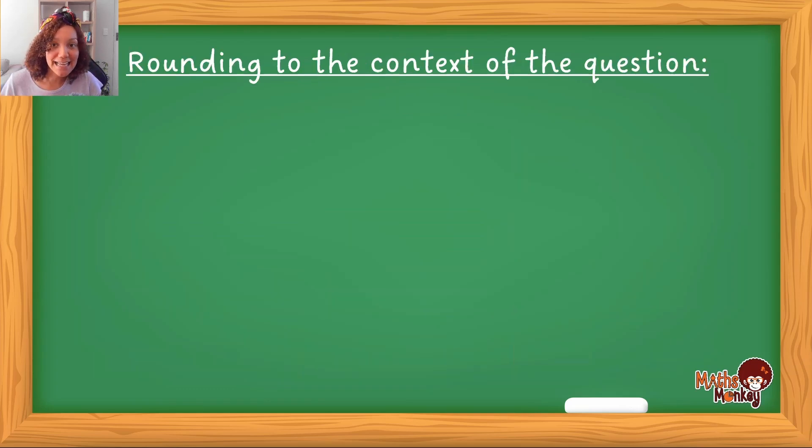Now the next section we're going to look at is rounding off to the context of the question. This is what they basically ask you in the instructions. They don't ask you anymore to round off to two decimal places. They ask you to look at the context of the question, what's the story of the question, and then round off according to the story. The first story example I'm going to give you is context one where we're just looking at money. Whenever we're working with money, you always round off to two decimal places.